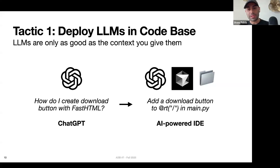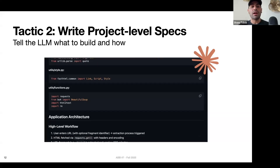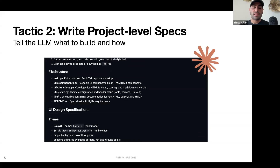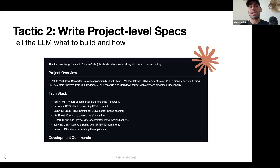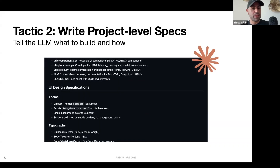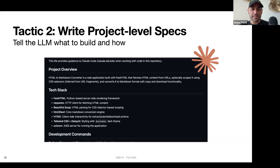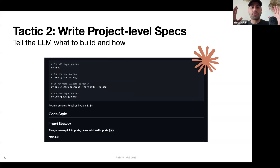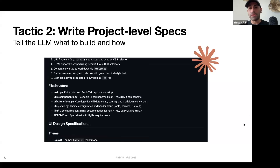The second tactic is to write project-level specifications — basically telling the LLM what you want it to build and how. One way to do this, specifically in Claude Code, is by generating a Claude.md file, which gets generated automatically with Claude. It's helpful to take 15 to 30 minutes at the beginning of a project and think through high-level specs: what tech stack, what file structure, what the UI should look like. This not only gives the LLM more guidance, it also gives you clarity of thought and a clear understanding of what you're actually trying to build.